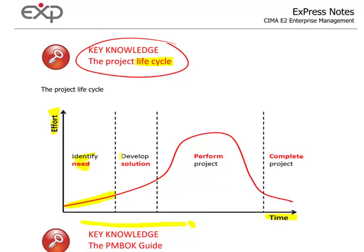The second stage, we look at developing a solution to whatever that need was. Time is going by, but the amount of effort is increasing. Once we've developed the solution, we actually undertake and perform the project. When we start performing the project, that's when the amount of effort increases — the highest level of effort is during the performing stage. Then the final stage is completing the project, furthest down the timeline, and the amount of effort drops down.